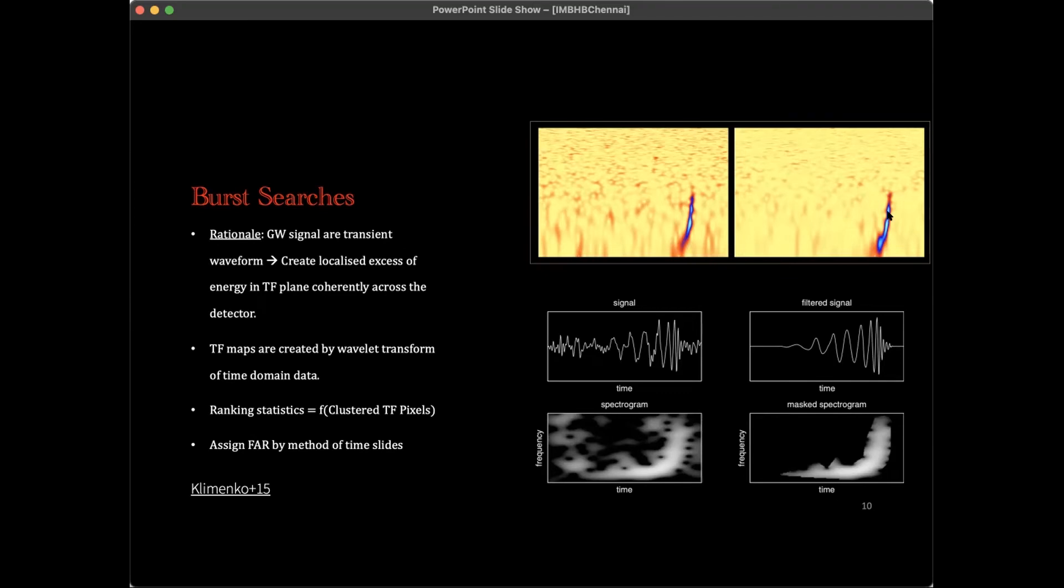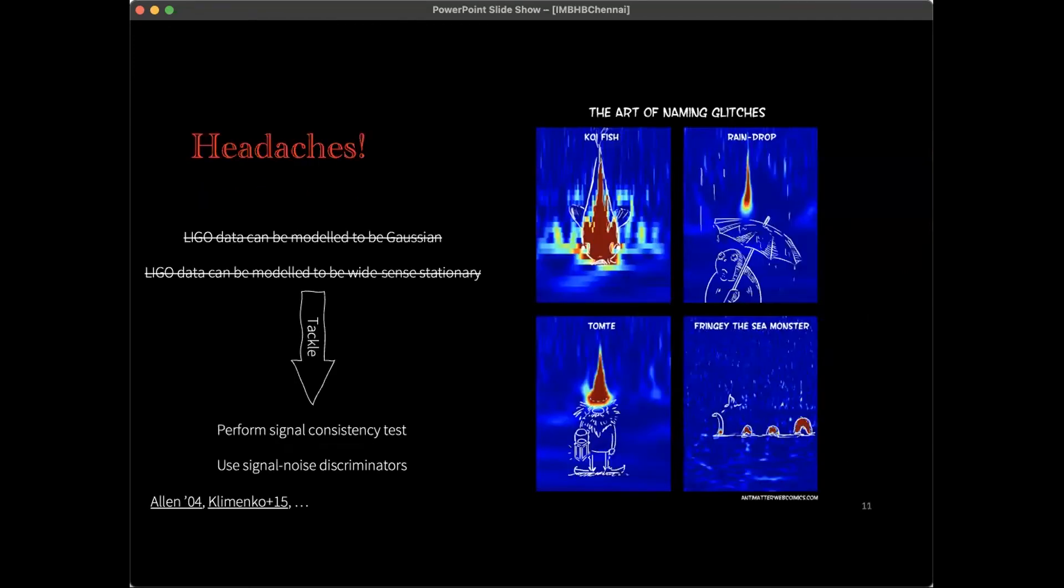To obtain this time-frequency representation, we map the time domain data into time-frequency domain via the wavelet transform. In particular, the coherent WaveBurst algorithm uses Wilson-Daubechies-Meyer transform, which has a unique property of providing a uniform time-frequency grid compared to other wavelet transforms which generally shrink in time as they crank up in frequencies. Then we rank these triggers by coherently measuring the total amount of energy of the cluster time-frequency pixels. The burst searches also assign a statistical significance based on the method of time slides.